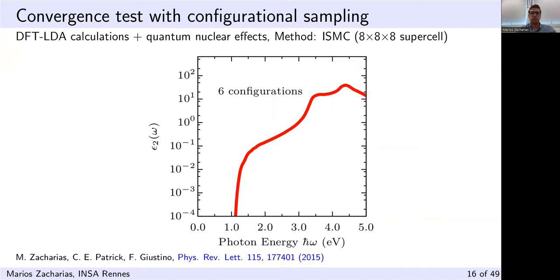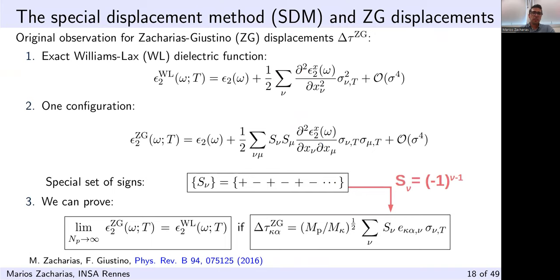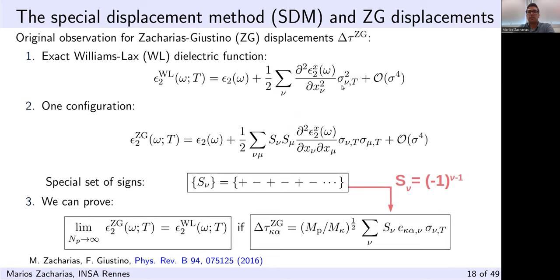Regarding convergence with respect to configurations: by increasing the supercell size, we need fewer and fewer configurations to obtain convergence. For six configurations in an 8×8×8 supercell of silicon — 1024 atoms — even one configuration does the job. This led us to do the math: we expand the dielectric function as a Taylor expansion and perform the multivariate Gaussian integration to obtain the exact Williams-Lax result. If we use only one configuration, the trivial choice is to set the normal coordinates equal to sigma, the mean square displacement of the atoms along each phonon mode.